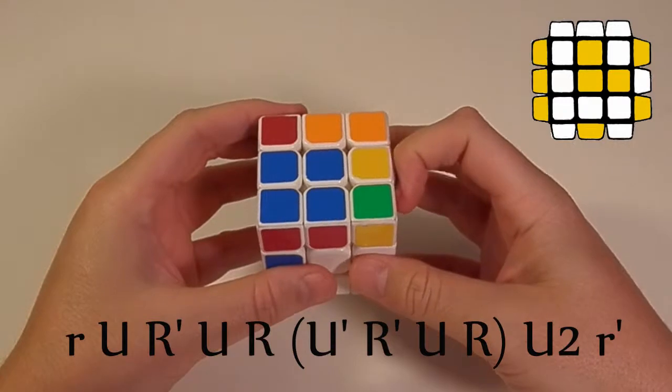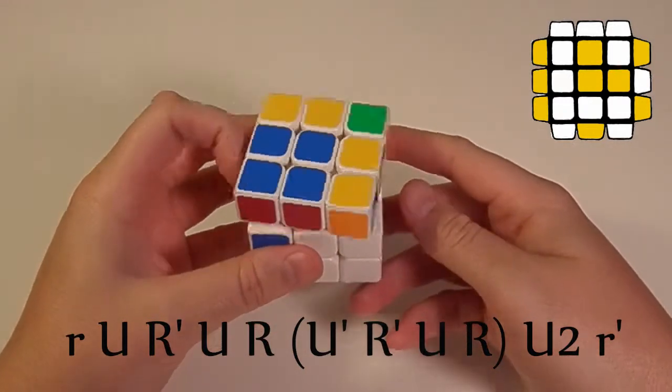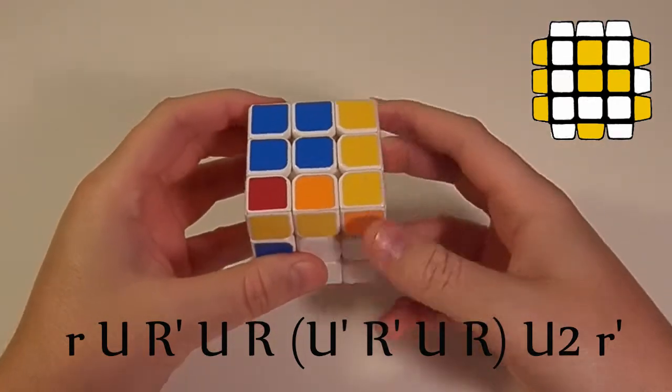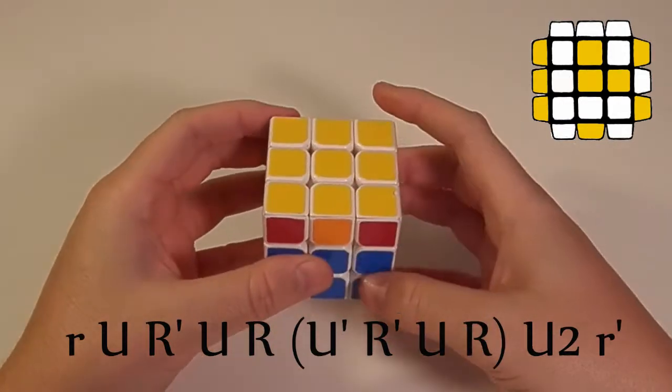Small r, u, r prime, u, r, u prime, r prime, u, r, u2, small r prime. And that will orient your layer.